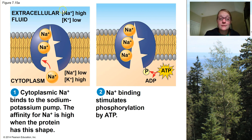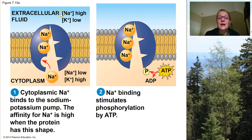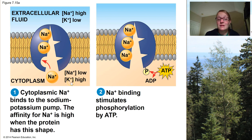This transport protein is specific for both sodium ions and potassium ions, hence why we call it the sodium potassium pump. Looking at our picture, the sodium potassium pump is shown in purple embedded in the plasma membrane. On the outside of the cell, sodium ions are high and potassium ions are low. On the inside of the cell, sodium ions are low and potassium ions are high. The cell wants to maintain that difference in concentration, so it continues to pump sodium ions out where their concentration is already high, and pump potassium ions in where their concentration is already high.